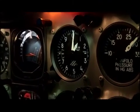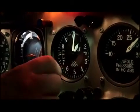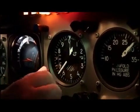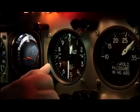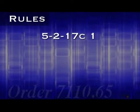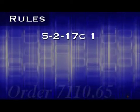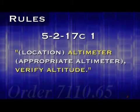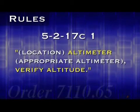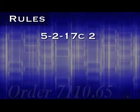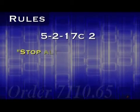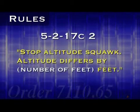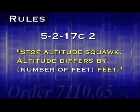One reason an altitude readout might be invalid is that the pilot may have the incorrect setting on his or her altimeter. If there is a discrepancy between the Mode C and pilot reported altitude, the 7110 requires that you have the pilot make sure the correct altimeter is entered by saying: the location of the reporting station, such as Academy, altimeter, and then the appropriate altimeter setting, verify altitude. If this does not resolve the discrepancy, you must have the pilot turn off their Mode C altitude reporting by saying: 'Stop altitude squawk. Altitude differs by,' and then the number of feet, followed by the word 'feet.'